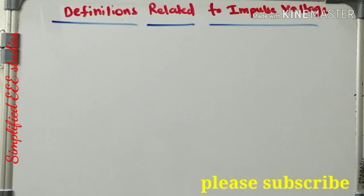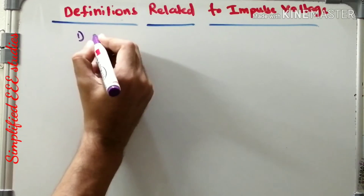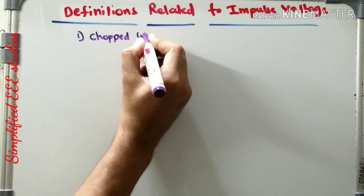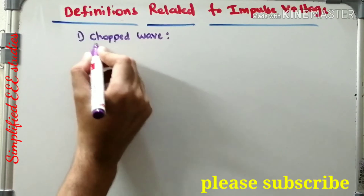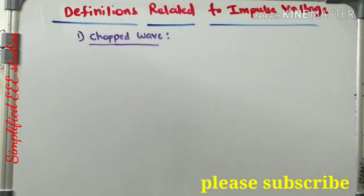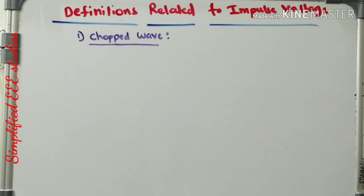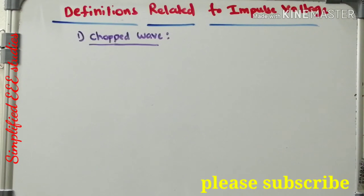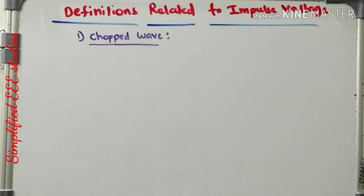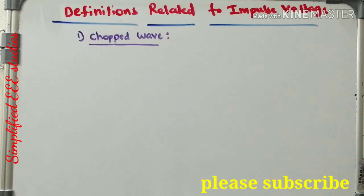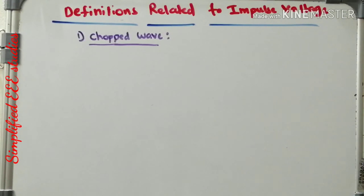The first terminology is chopped wave. Before that, let me introduce two terms: flashover and puncture. Flashover is the dielectric breakdown occurring in liquid or gas. Puncture is the dielectric breakdown occurring in solid dielectric material.